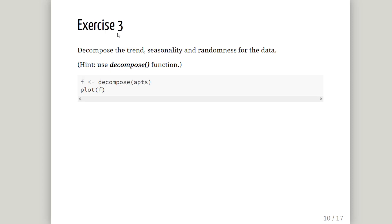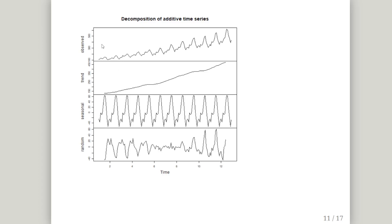Next, decompose the trend, seasonality and randomness for the data. The hint is to use the 'decompose' function. We apply it to the time series data set and store the result in an object 'f', then plot 'f'. This breaks it up into multiple parts: the original time series at the top, followed by the trend, the seasonal component, and the random component. So it's a decomposition of an additive time series.